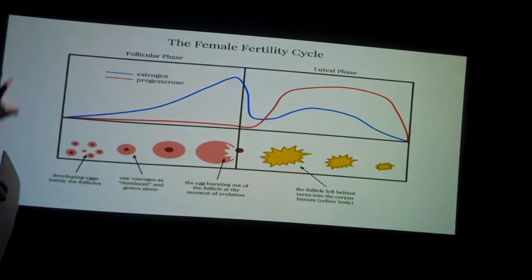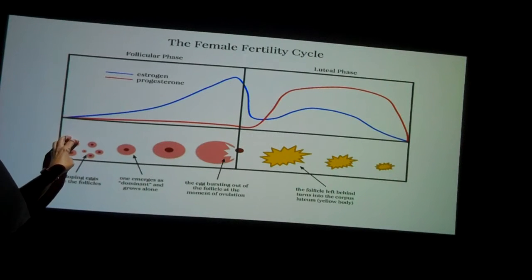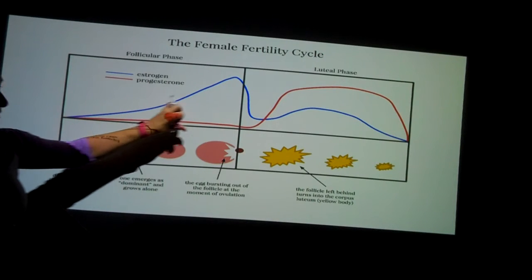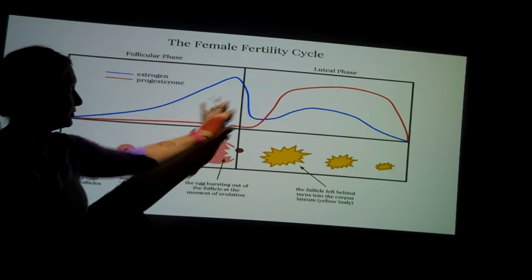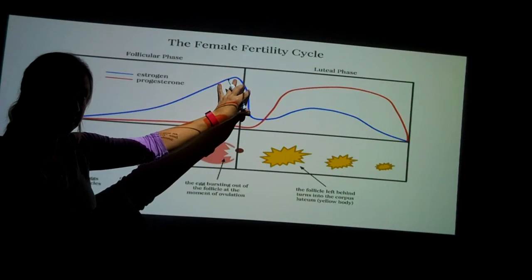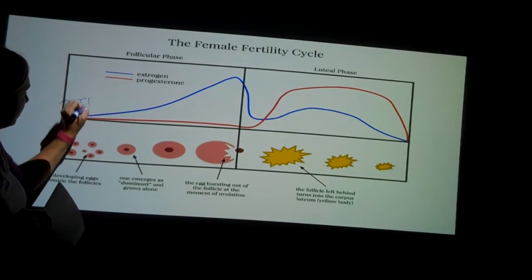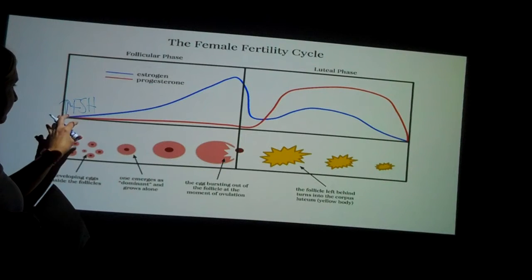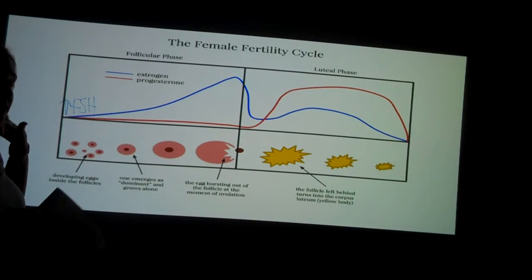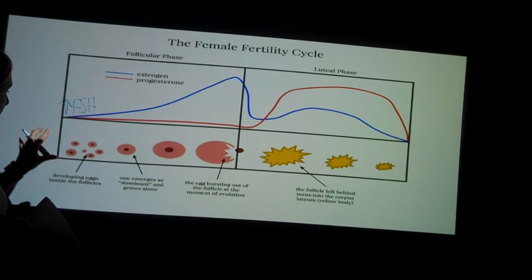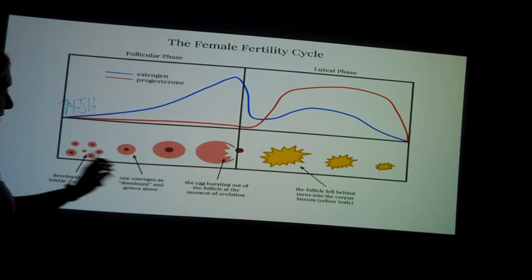Her bleeding would occur, it would stop, and then we're right back here at this picture. At the same time that you see an increase in estrogen leading up to the day of ovulation during this next cycle, there is an increase in FSH, which stimulates the production of multiple follicles, but only one egg will mature and release.